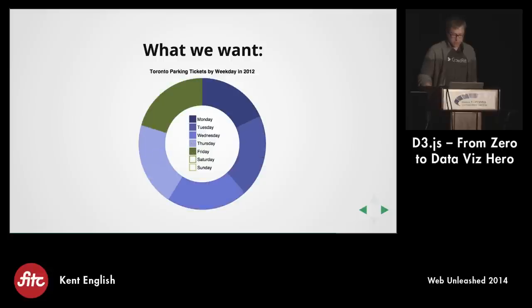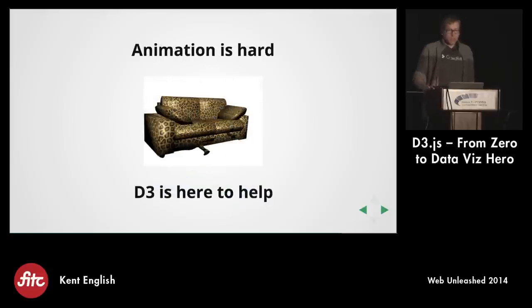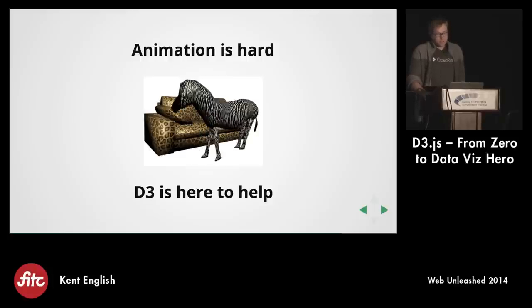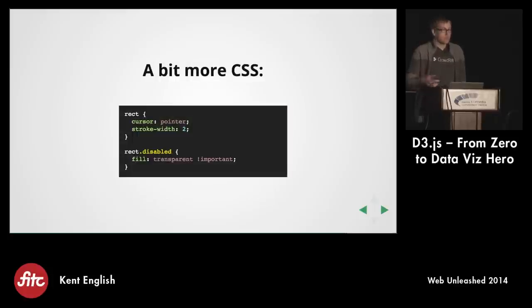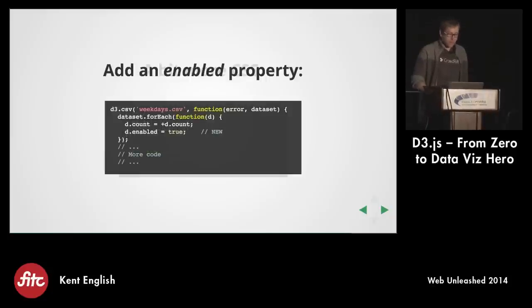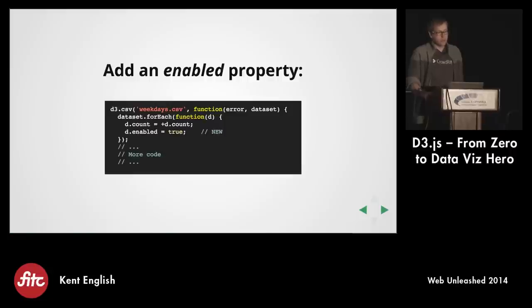Animation is hard, but D3 makes it quite easy. There are patterns for animation, just like we had the selectAll/data/enter/append pattern. First we need a little more CSS — when we click on a box, we want it to go white inside with just the border remaining, and we want a pointer cursor so people know to click on it. We also need to add a few things to our existing code. When we first get our data set and iterate through it to cast things to numbers, we're going to add a property called enabled — this lets us know whether that particular data point should be shown in the chart or not.